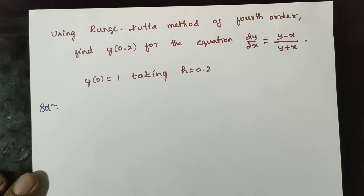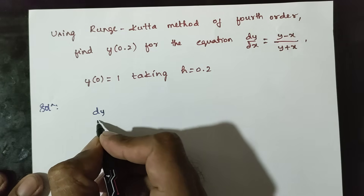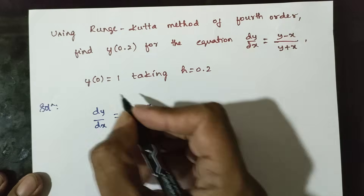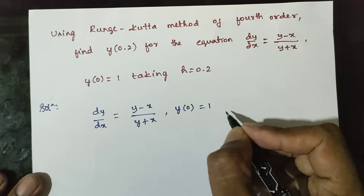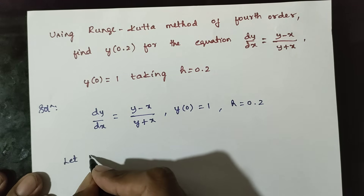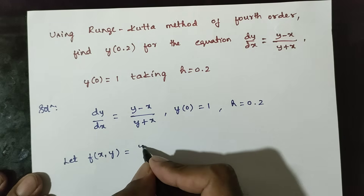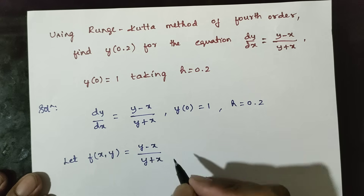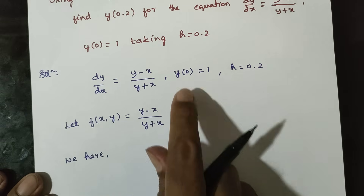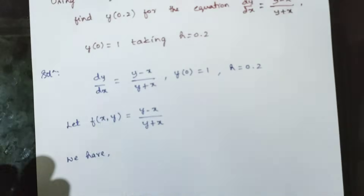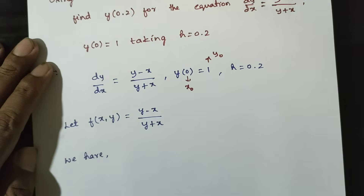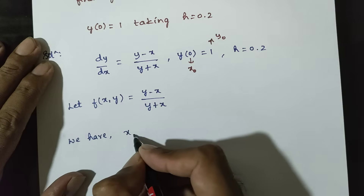I am going to examine the solution. First, given data: dy/dx is equal to (y minus x) by (y plus x). y(0) is equal to 1, h is equal to 0.2. Now, dy/dx is equal to f(x, y) is equal to (y minus x) by (y plus x). The value of x0 is equal to 0, y0 is equal to 1, h is equal to 0.2.